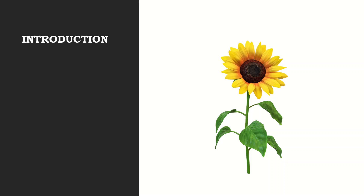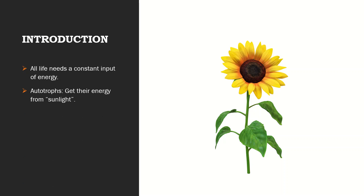However, organisms can't use light energy directly for their metabolic needs. Instead, it must be converted into chemical energy through the process of photosynthesis. All life needs a constant input of energy, so I'll be giving you a little introduction to this topic.